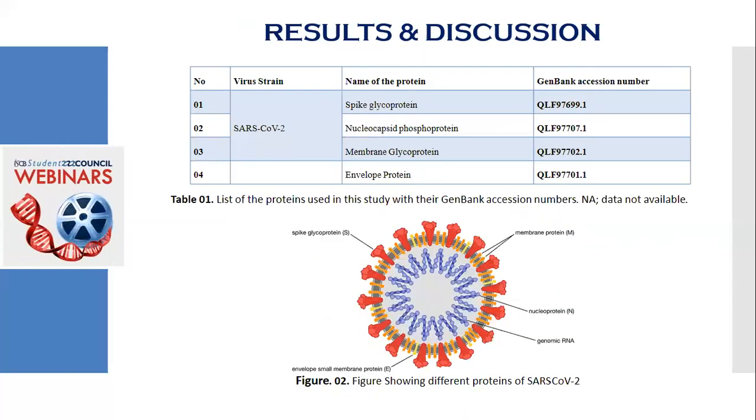In our results and discussion, at first, the four proteins, as I have mentioned above, were selected and then the protein sequences were retracted from the NCBI database. Here in this table, this table lists the GenBank accession IDs of the selected protein sequences.